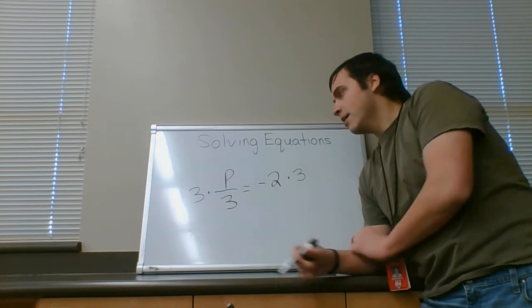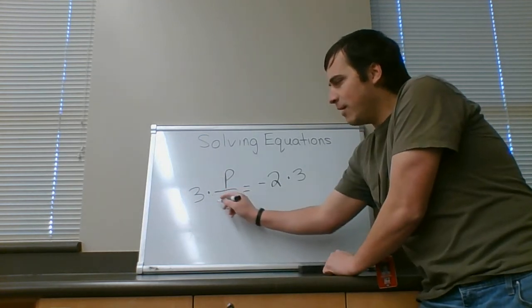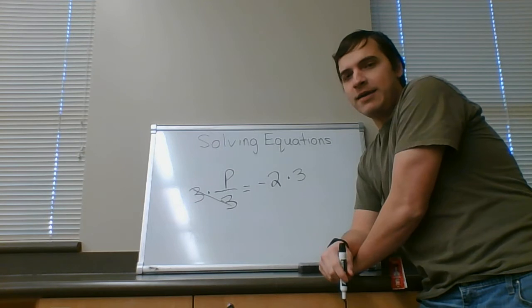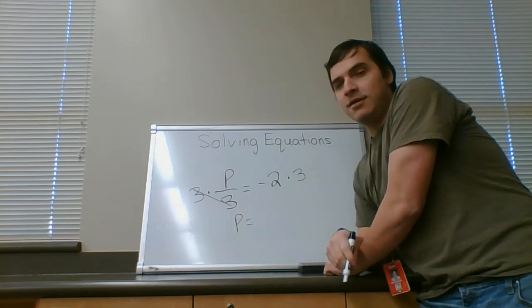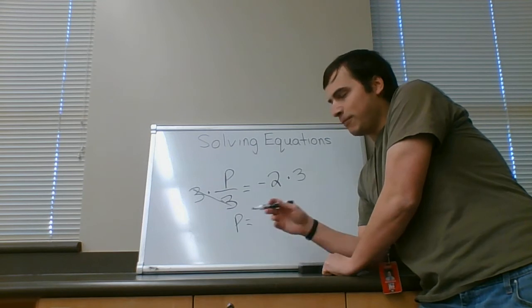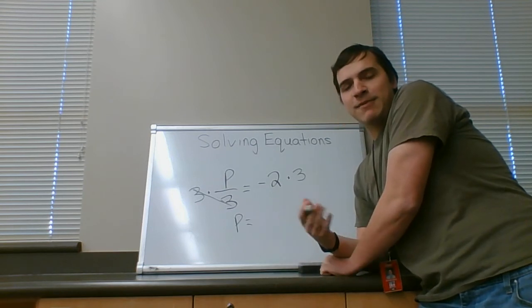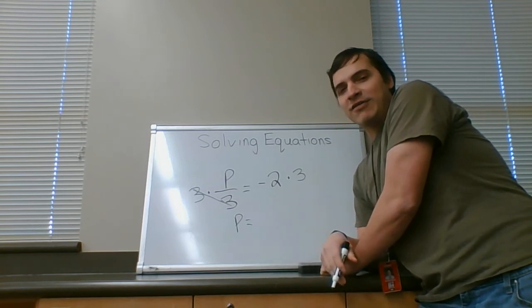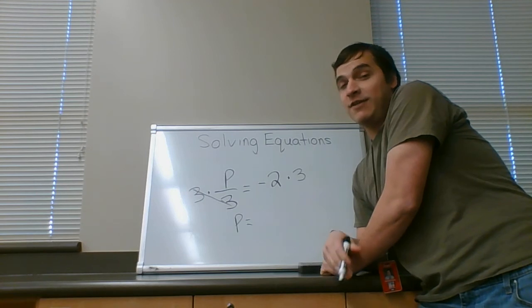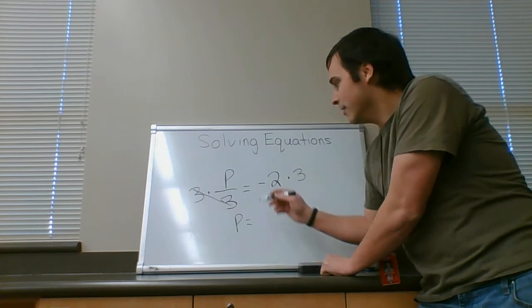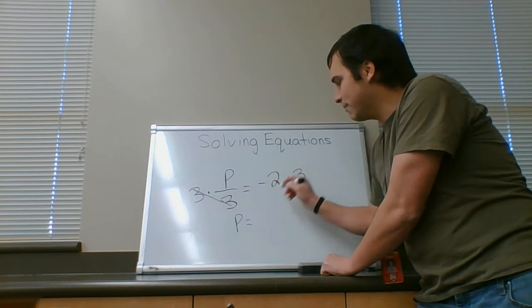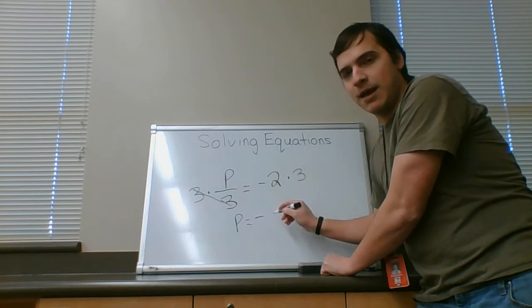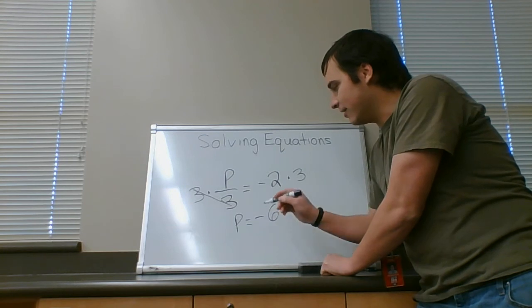But this is a pretty basic one. 3 times 1 third will cancel. Go away. We don't like you anymore. That leaves you with just 1p over there. I said 1p, but I just wrote p. 1p and p are mathematically equivalent. You don't have to write the 1 unless you really want to. Negative 2 times 3. Well, negative times positive gives you negative. 2 times 3 is 6. That is your answer.